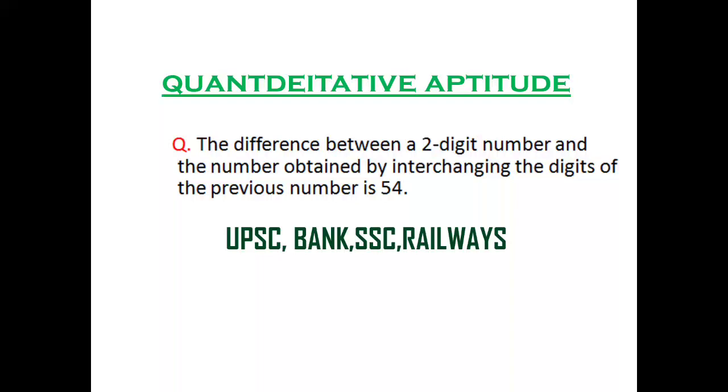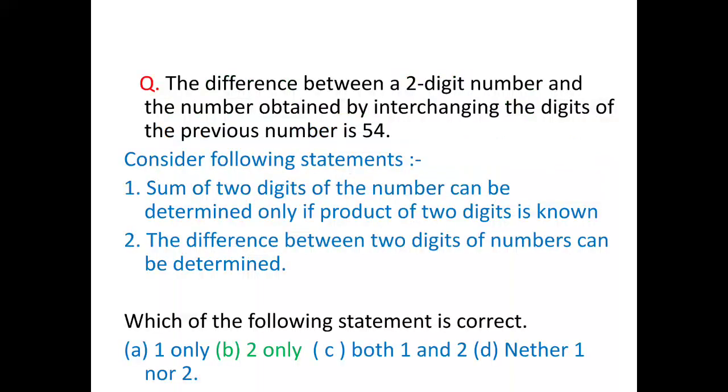Today we will see a quantitative aptitude question that is asked in almost all exams, so a very popular question. The question reads: the difference between a two-digit number and the number obtained by interchanging the digits of the previous number is 54.